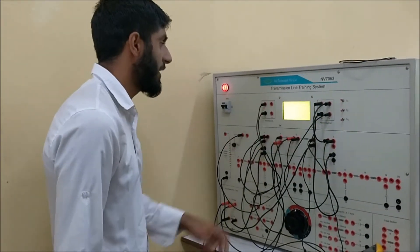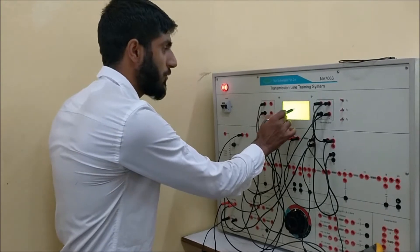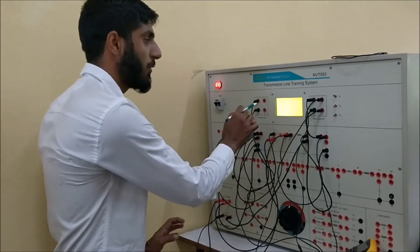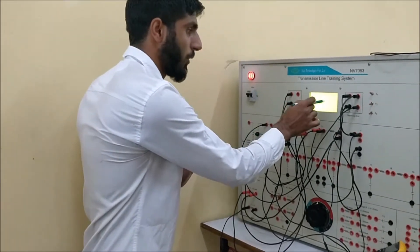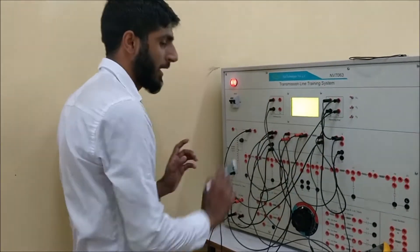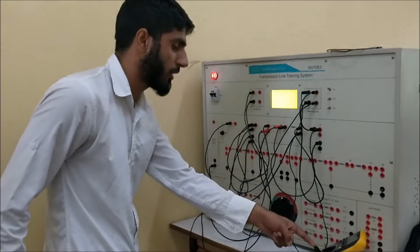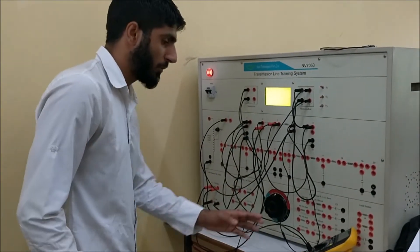From the display it's clear that Vs equals 110 volt and Vr equals 109, meaning sending end voltage and receiving end voltage. And in the open circuit Ir is zero, which is clearly seen on the screen. And Is equals 104 milliampere on the multimeter.